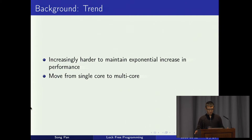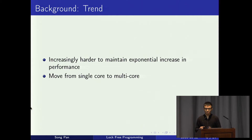Over the past few years we have experienced increasing difficulty in maintaining the same kind of speed increase in single-core CPUs as predicted by Moore's Law. There are various reasons for this: the size of transistors just can't shrink anymore, or the gap between the speed of memory and the CPU is ever widening.